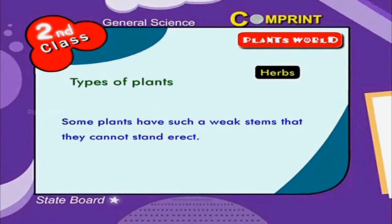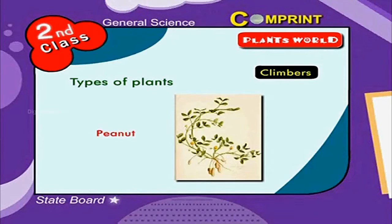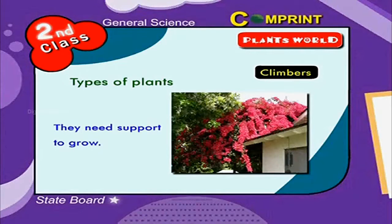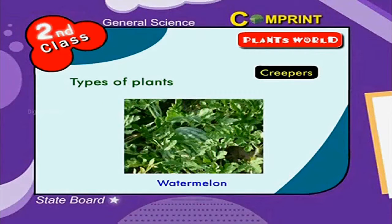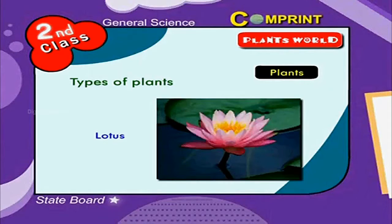Some plants have such weak stems that they can't stand erect. Such plants are called climbers. For example, peanut, bean, and bougainvillea are climbers. They need support to grow. Plants like pumpkin, bottle gourd, and watermelon grow along the ground — these plants are called creepers. Some other plants grow in water, like lotus and water lilies.